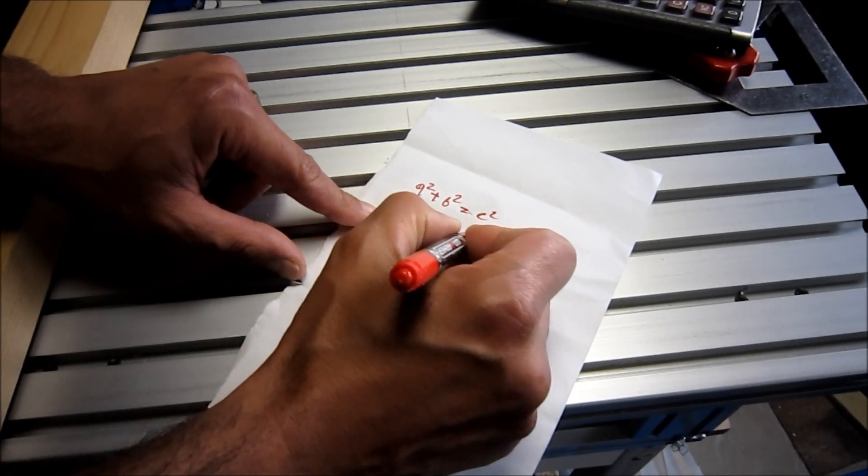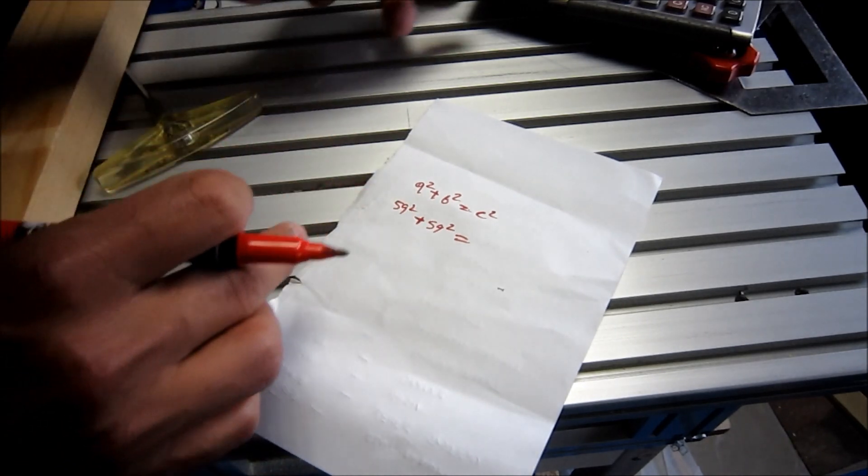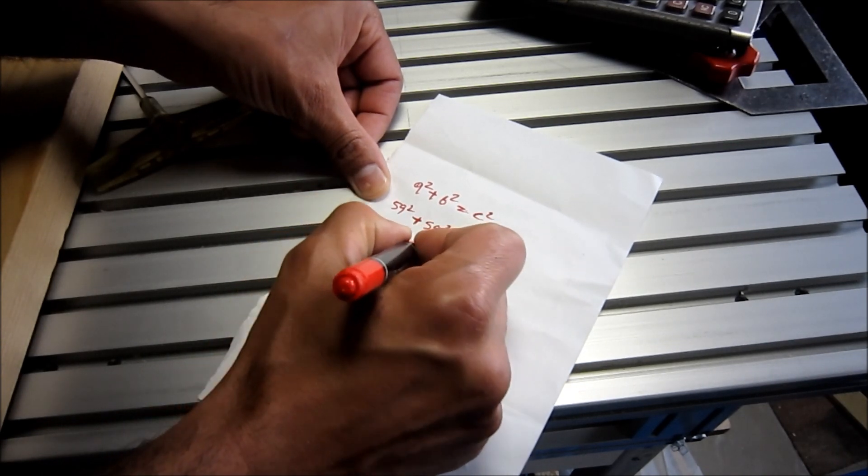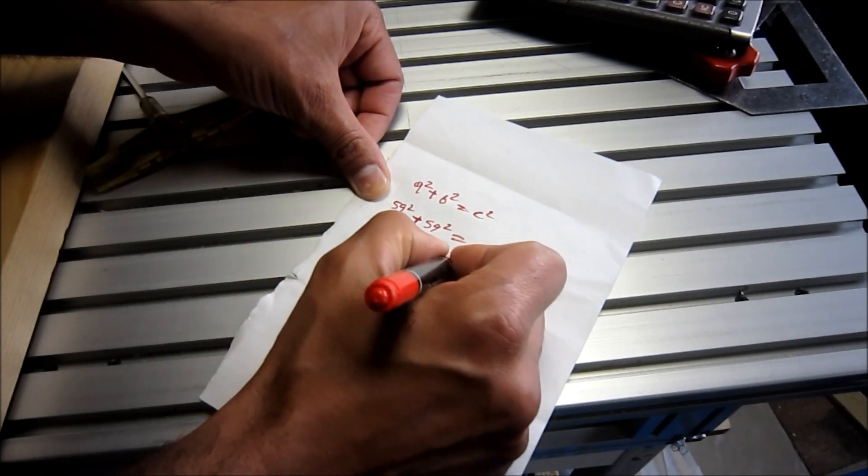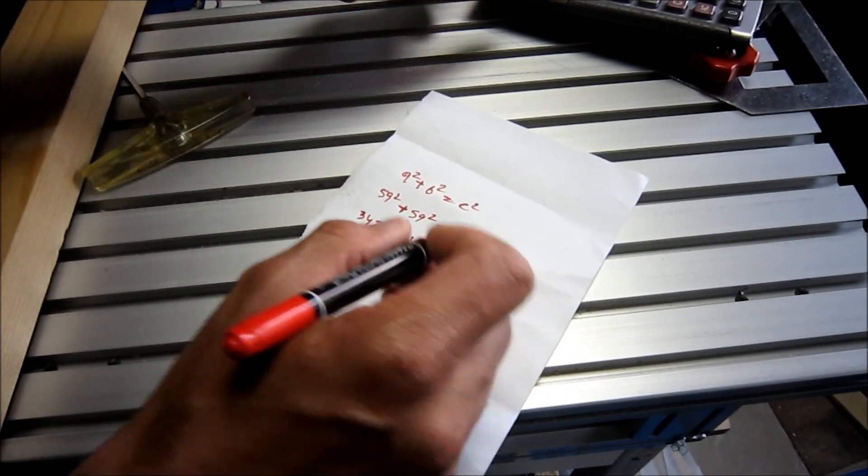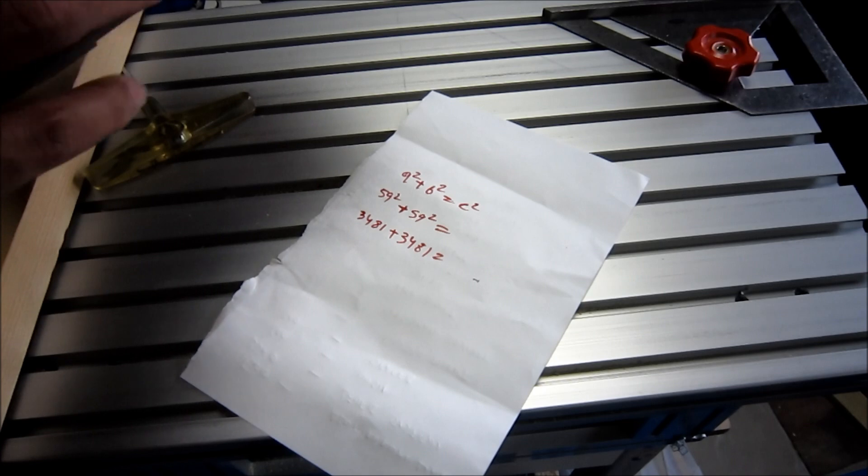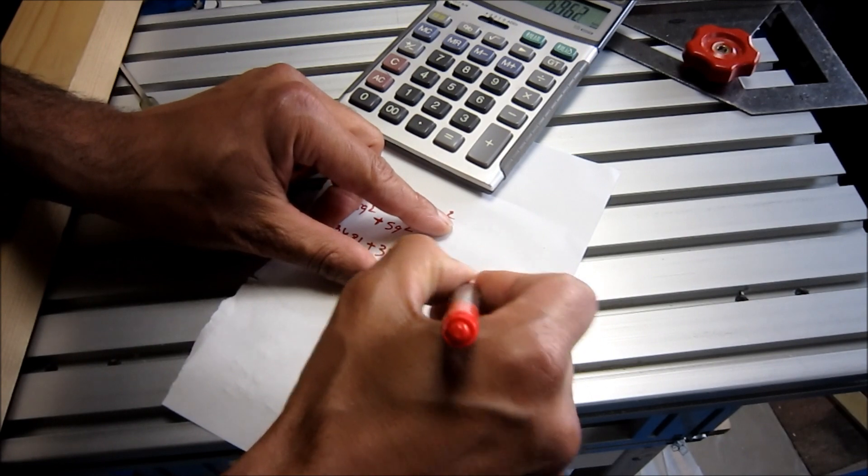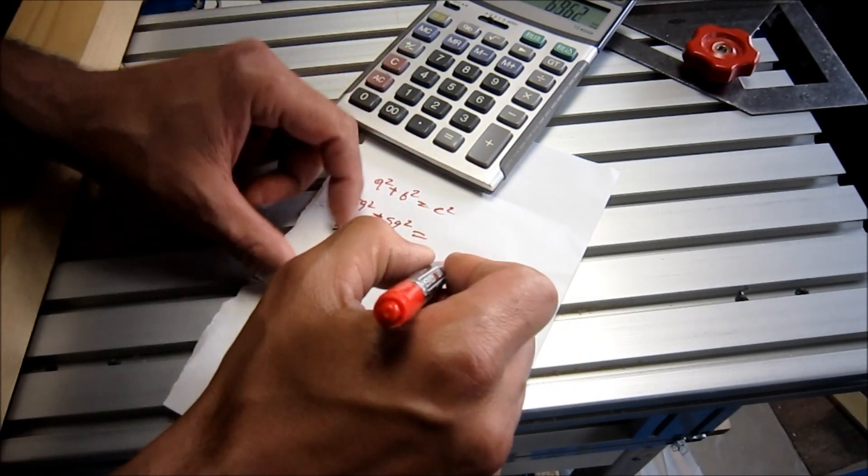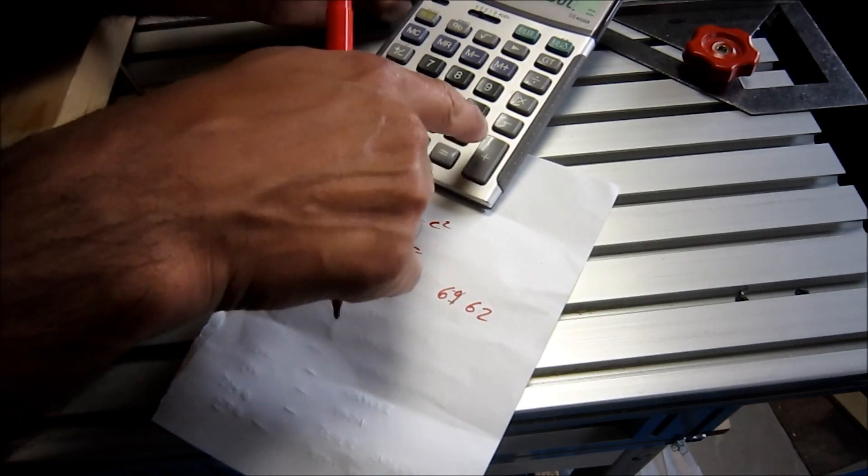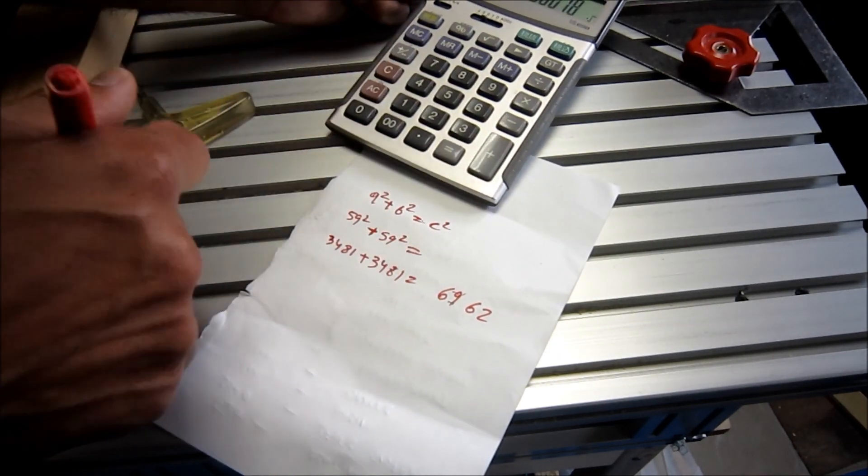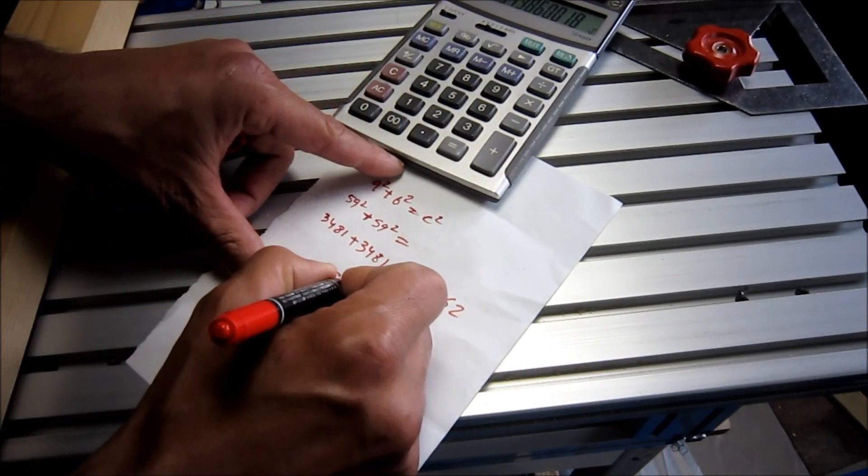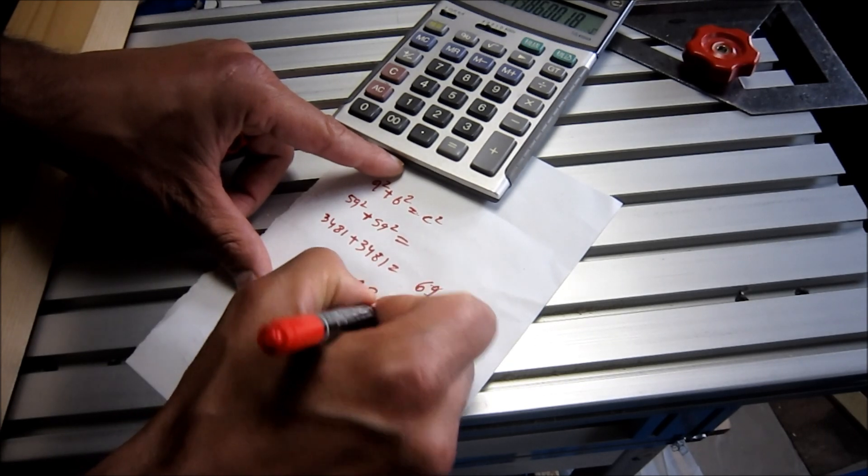So this is going to be 3481 plus again 3481. So this is going to be 6962. So then we are going to make, it should be 83, 83.5.